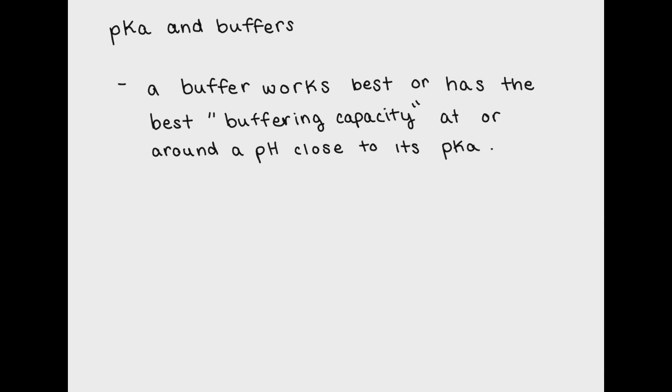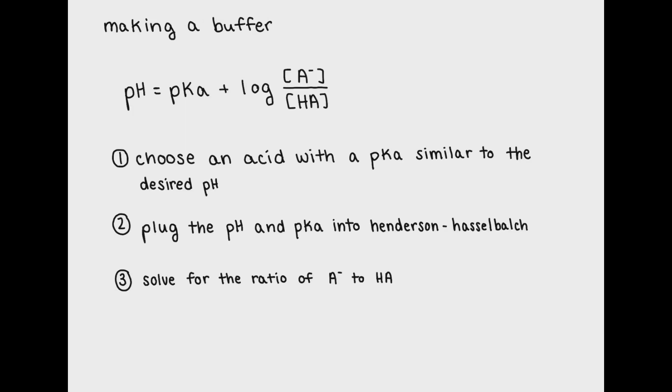Now let's talk about how you would go about making a buffer. Here I've got the Henderson-Hasselbalch equation above, which is what you use to make a buffer. First you have to choose an acid-base conjugate pair that has a pKa very similar to the pH. Usually you'll be given the desired pH of your buffer system.